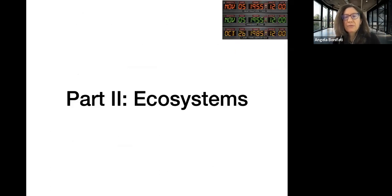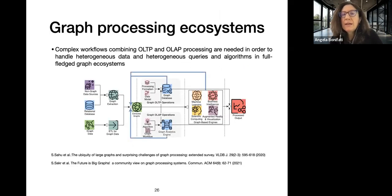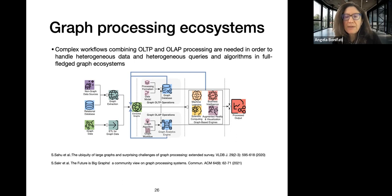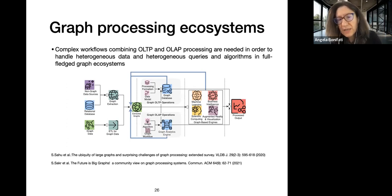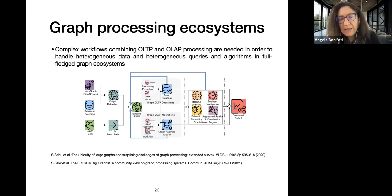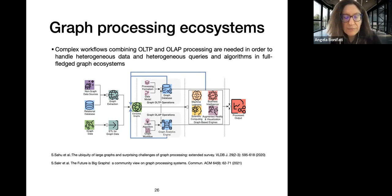Let's go to part two: ecosystems. Going back to the overview figure, graphs can be used as the data model interacting with advanced processes like ML, AI, visualization, and business intelligence. The idea of combining OLTP and OLAP operations — and having a hybrid between the two — was discussed during our Dagstuhl seminar and was also one of the findings of a practical usage survey on graphs with real users published in VLDB Journal 2020.